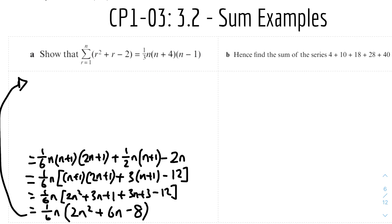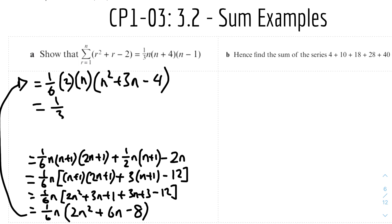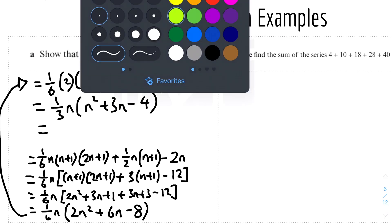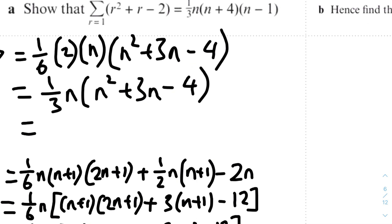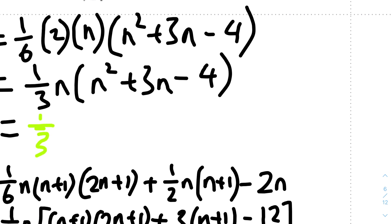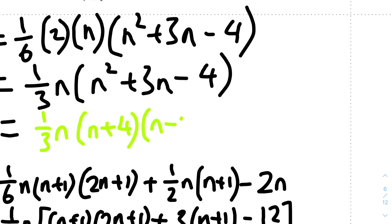Factorizing 2 out gives one-sixth times 2 times n times (n² + 3n − 4), which simplifies to one-third n times (n² + 3n − 4). Factorizing the quadratic: (n + 4)(n − 1). Therefore the sum equals one-third n(n+4)(n−1).